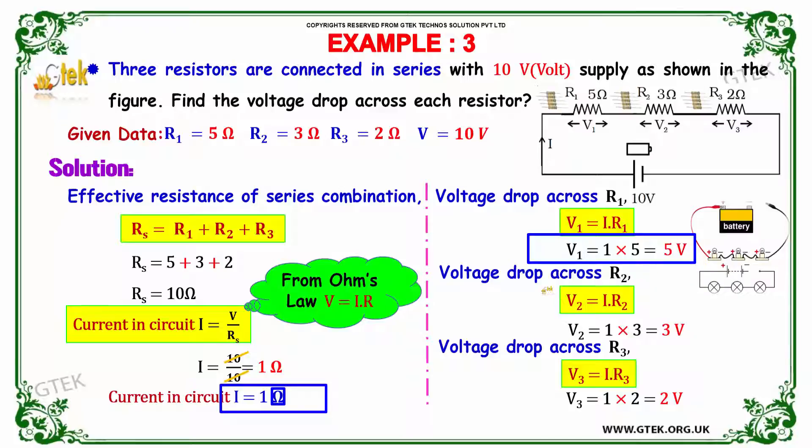So V2 equal to I into R2, so I is 1 and R2 is 3, so the voltage drop across R2 is 3 volt. So voltage drop across R3 is I is 1 and R3 is 2, so 1 into 2, so voltage drop across R3 is V3 equal to 2 volt.